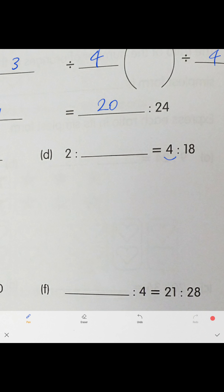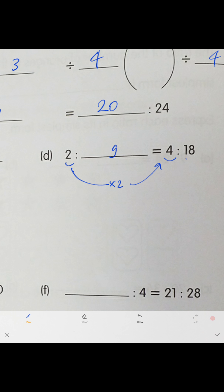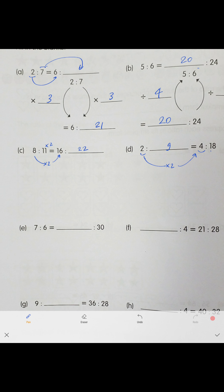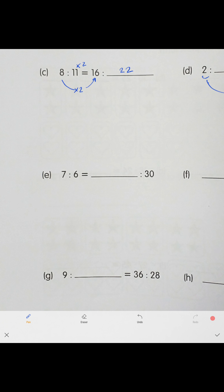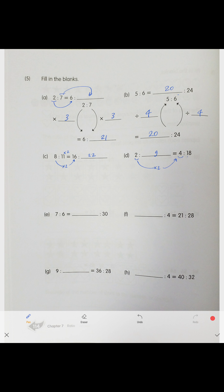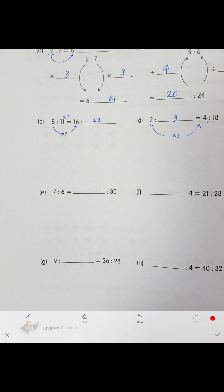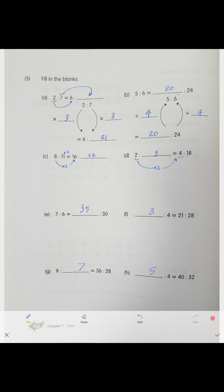Next problem: 18 — divide by 2, and 2 times 2 becomes 4. So 2 to 9, and 9 times 2 becomes 18. You get the idea — solve everything yourself. I'll give you the answers to check: 35, 3, 7, 5.